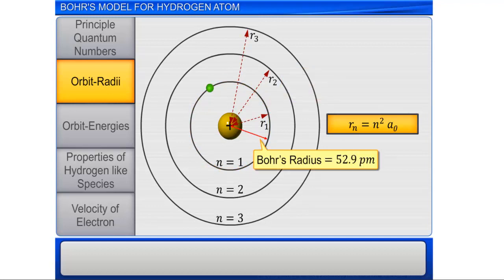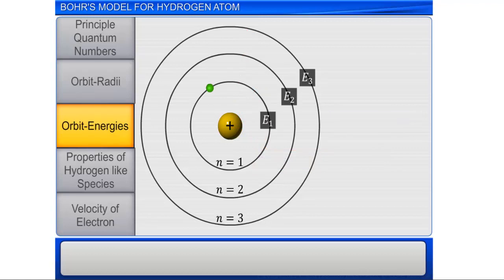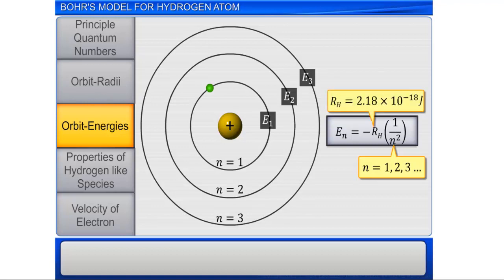The energy of a stationary state, or orbit, is given by the equation. Energy of the nth orbit, En, is equal to minus Rh multiplied by 1 divided by n squared, where n is the principal quantum number of the orbit, and Rh is Rydberg's constant, whose value is 2.18 multiplied by 10 raised to the power minus 18 joules.